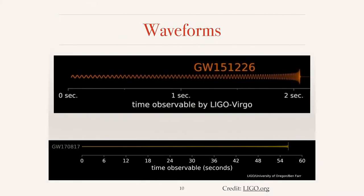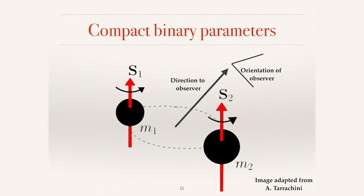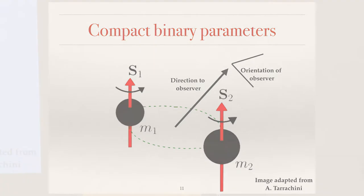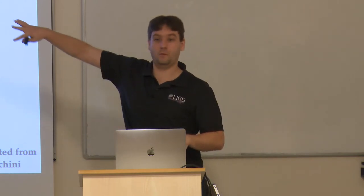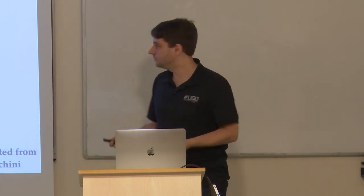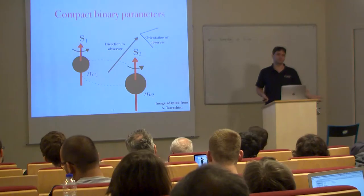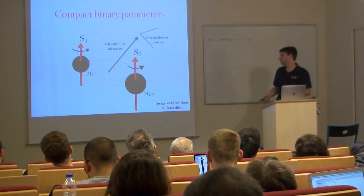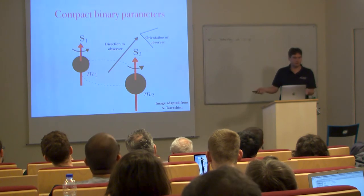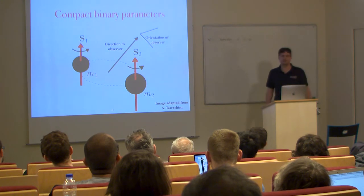The waveforms we use look like the examples already shown. We don't know exactly the waveform we'll be given, because compact binary mergers are described by a large set of parameters. Even considering binary black holes on circular orbits, you need 15 parameters — the masses of the two objects, the angular momentum of each black hole, and angles describing the observer's orientation. Add two more for eccentricity, more for neutron star equations of state, more for exotic objects or non-GR theories.